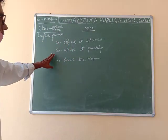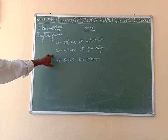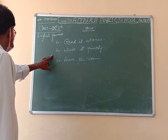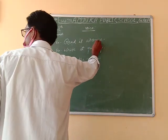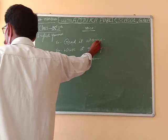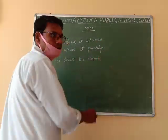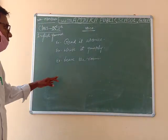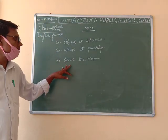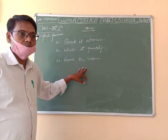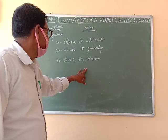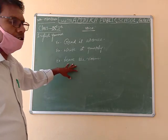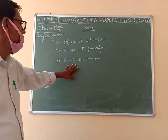Focus on it. These three sentences are already related with imperative sentence. So first we have written three examples. Number 1: read it at once. Number 2: write it quickly. And number 3: leave the room.